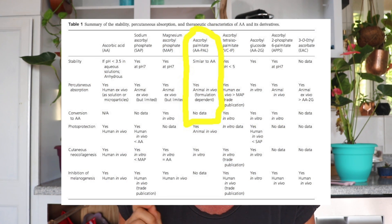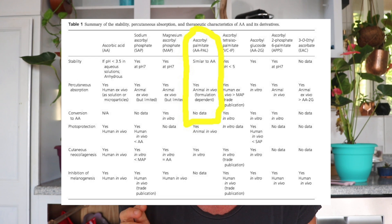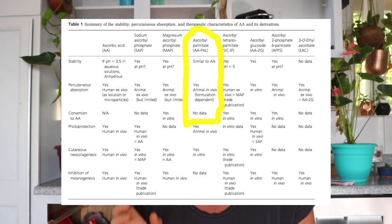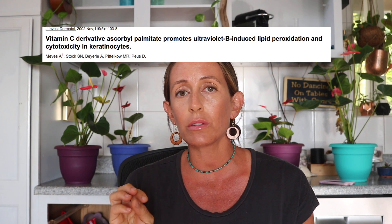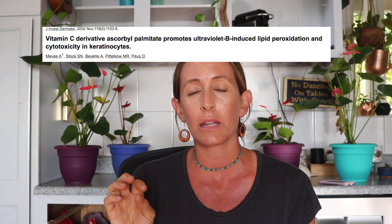The first oil-soluble derivative is ascorbyl palmitate. Let's look at our table. Stability: similar to ascorbic acid. Percutaneous absorption: yes, in animals — with parentheses noting it's formulation dependent. Conversion to ascorbic acid: no data. So we don't actually know that it will be converted to ascorbic acid in the skin. Additionally, a 2012 study showed that ascorbyl palmitate actually contributed to lipid peroxidation in the skin — I'll link the summary of that article below.